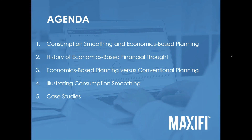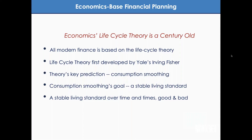The agenda for today's talk: first I'm going to talk about consumption smoothing, which is the core concept underlying economics-based planning, and mention briefly the history of economics-based financial thought. Then I'll describe the difference between economics-based planning and conventional planning, illustrate this using our MaxiFi software — our company is Economic Security Planning and our main tool is the MaxiFi Planner at maxifiplanner.com — and then give you a case study to make this more concrete.